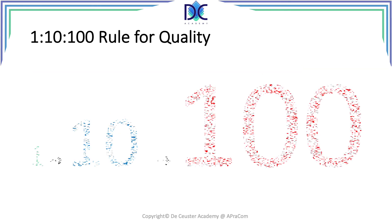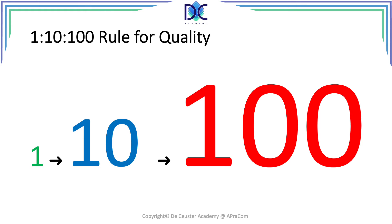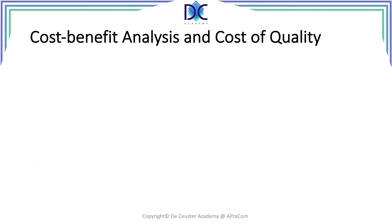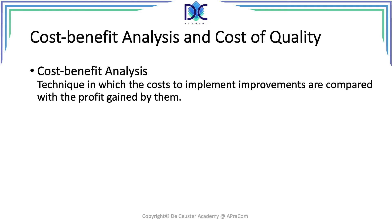Another element is the 1-10-100 rule, which says that with every step it takes to discover a quality issue, the cost is multiplied by a factor of 10. Related to this is the cost-benefit analysis — a technique in which the cost to implement quality improvements is compared with the profit gained. It's a financial evaluation: what will we get out of investing a certain amount? What will we save? What will be the net present value? These are the financial evaluation parameters of a project.